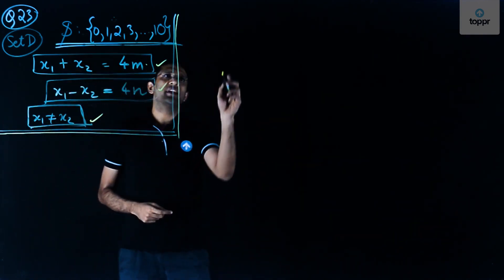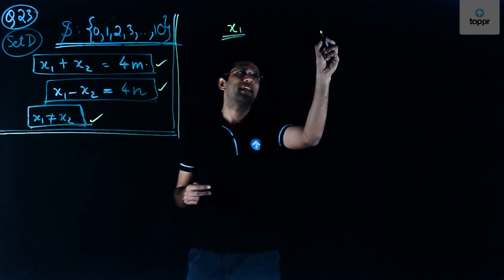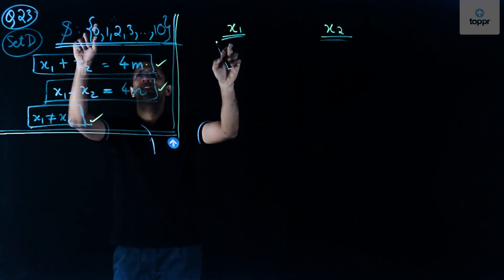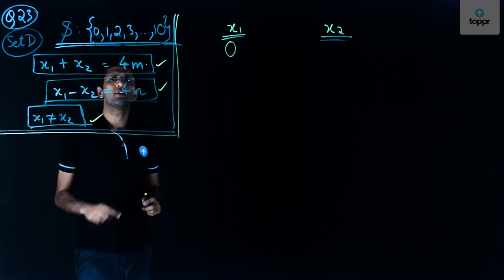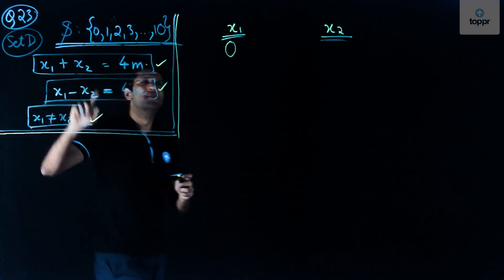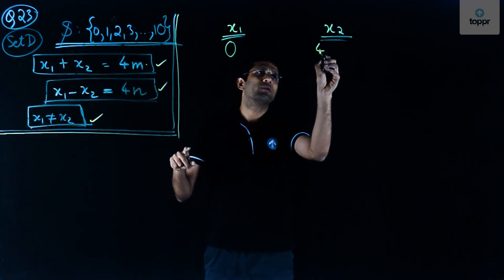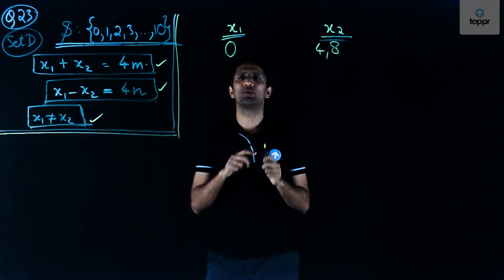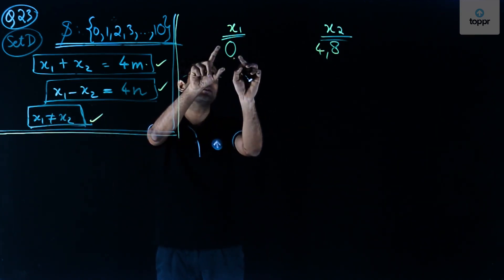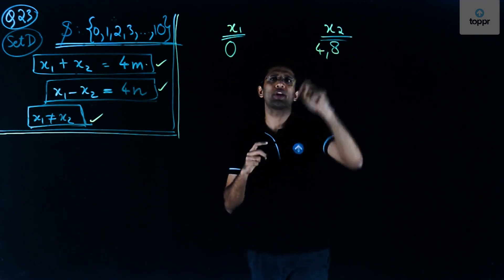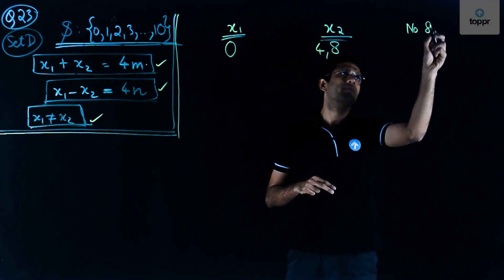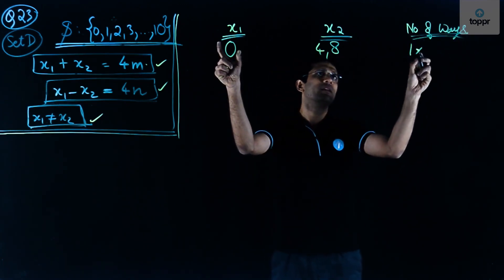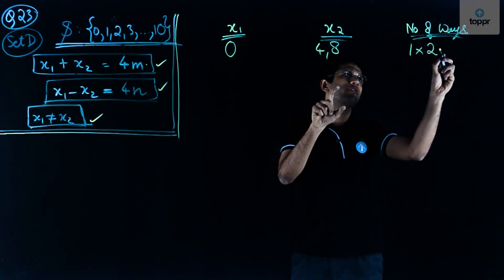Let's get started. We take the first number as x1 and the second as x2. Starting with the smallest value, x1 = 0. The possible values x2 can take are 4 and 8. We exclude 0 itself since we need different numbers. So for x1 = 0, x2 can be either 4 or 8, giving us 1 × 2 = 2 ways.